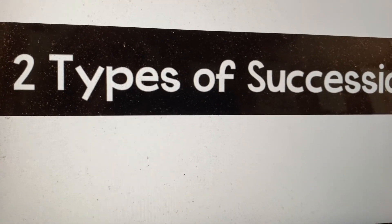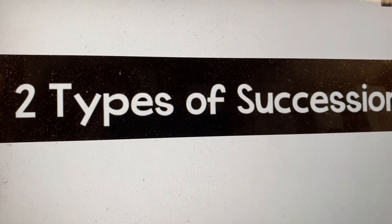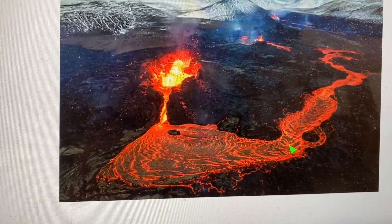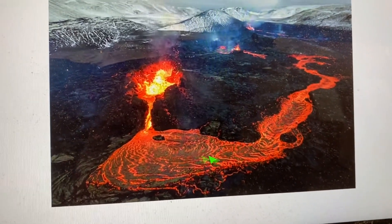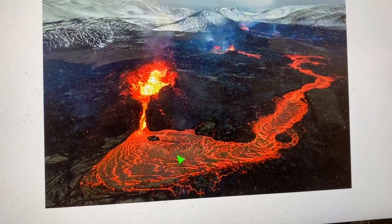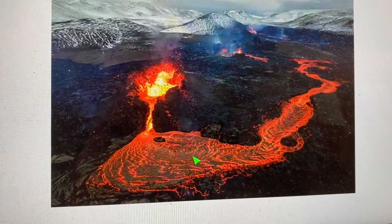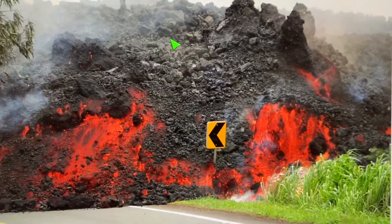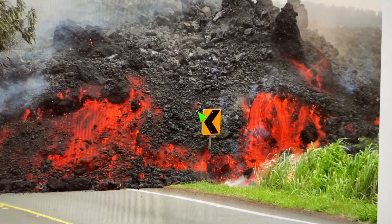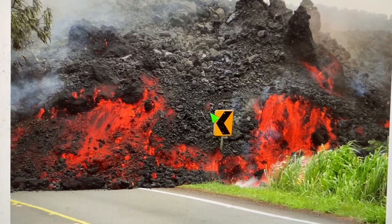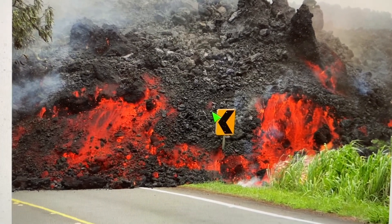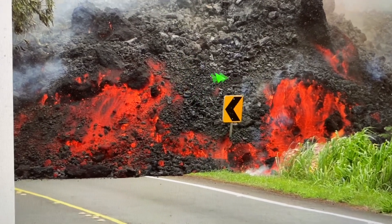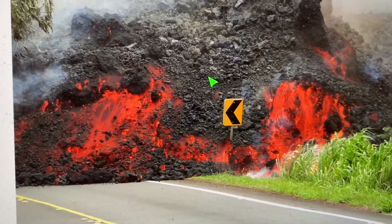There are two types. The first type happens on brand new land, and we call that primary succession. Brand new land — where might you find that? Brand new land like volcanic lava flows that turn to rock: brand new rock on the surface of the earth waiting to be colonized by living things. What happens on brand new earth we call primary succession. Primary — brand new — first time anything's in there. And that's going to basically turn this rock into whatever the habitat is supposed to be.